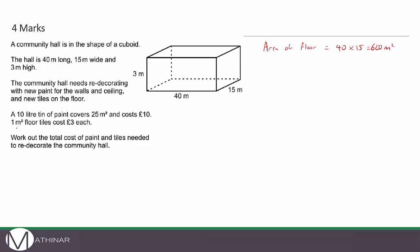Now the cost of the floor tiles: one meter squared of floor tiles costs three pounds. So 600 meters squared will cost 600 × £3 = £1,800. That is the cost of the tiles.